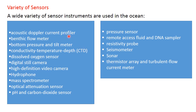Sensors used in underwater applications include: Acoustic Doppler current profiler, venturi flow meter, bottom pressure and tide meter, conductivity temperature depth (CTD), dissolved ozone sensor, digital still camera, high definition video camera, hydrophone, mass flow meter, optical attenuation sensor, pH and carbon dioxide sensor, pressure sensor, remote access fluid and DNA sampler, resistivity probe, CTD rosette, sonar, thermistor array, and tip and thermal flow sensors.